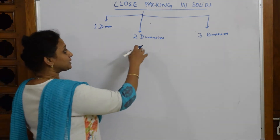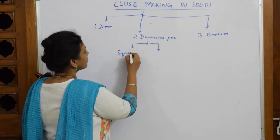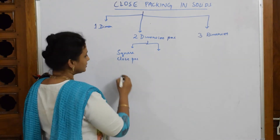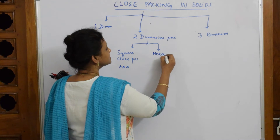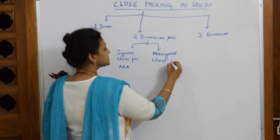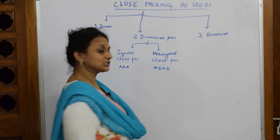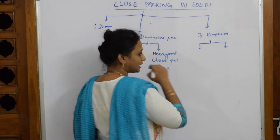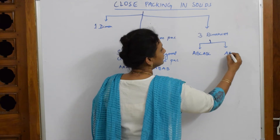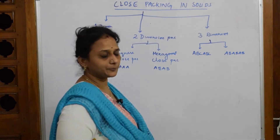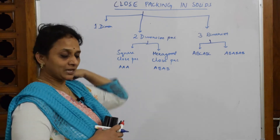Two dimensional packing is divided into square close packing — that is an AAA type of packing — and hexagonal close packing, which is an ABAB type. For three dimensional packing, you have ABC type packing and also ABAB type packing. I'll explain each one after the other.